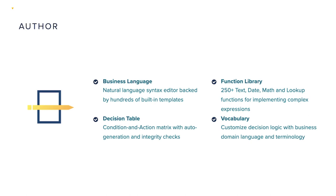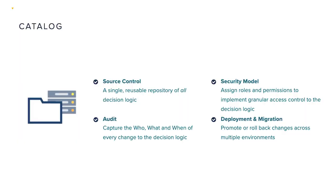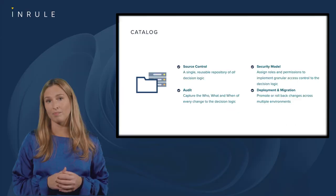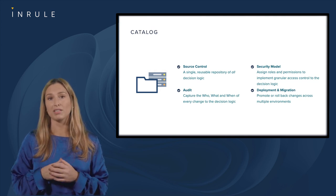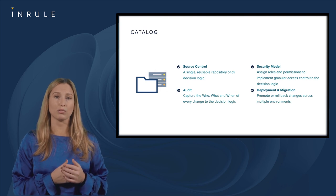Within our authoring environment, you'll be able to author business rules using natural language syntax, with an editor backed by built-in templates. You can also author rules using decision tables, a condition and action based matrix with built-in functionality for auto generation and integrity checks. You can customize decision logic using your business domain language and terminology with vocabulary. We also have a function library with over 250 functions for implementing complex expressions. The catalog is a single reusable repository for all of your decision logic, which captures the who, what, and when of every change, and is used to assign roles and set permissions for granular access control.